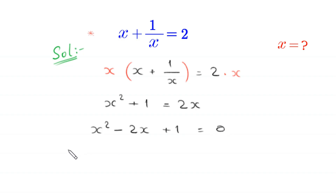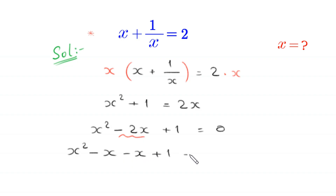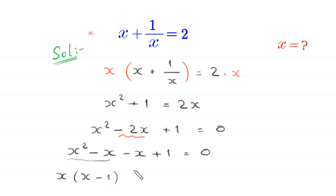Next, we can write this negative 2x as negative x minus x. So x squared minus x minus x plus 1 is equal to 0. From the first two terms we can factor out x, giving x(x minus 1), and from the last two terms we can factor out negative 1, giving negative 1(x minus 1), is equal to 0.